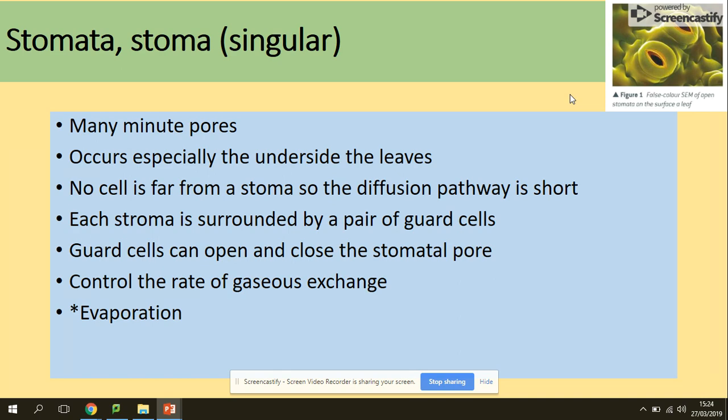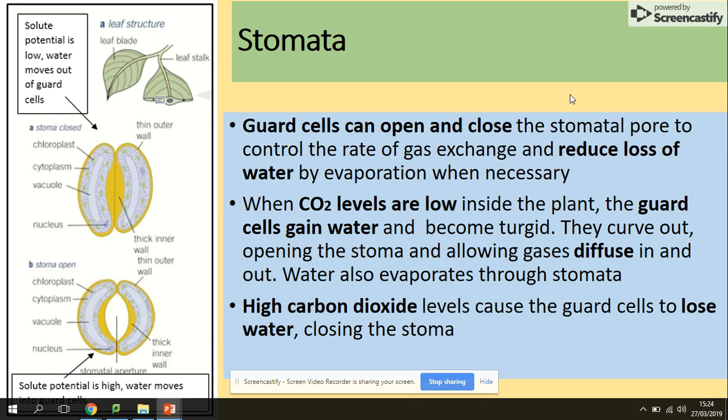Stomata then, one more time - guard cells closing and opening them. When the levels of carbon dioxide are low, the guard cells gain water to become more supported, more turgid, and they curve out, opening the stomata and allowing gases to diffuse in and out.